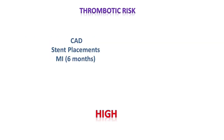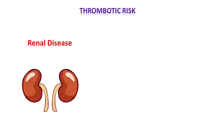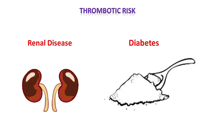Then we come to the high thrombotic risk: patients with coronary artery disease, history of stent placement, or recent myocardial infarction. Patients with bare metal stents placed within one month have a higher thrombotic risk; this window is 12 months in the case of drug-eluting stents. Other factors that contribute to thrombotic risk include renal disease, diabetes, etc.